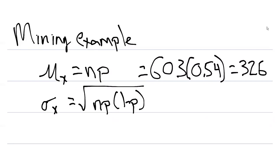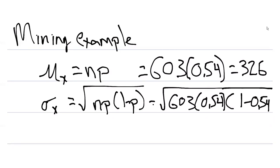We need to know what n and p are for the standard deviation, and so here we get 603 times 0.54 times 1 minus 0.54. Be sure to take the square root of all of that underneath the square root sign, and that's going to equal 12.24.